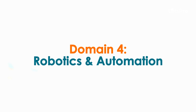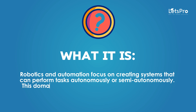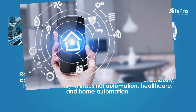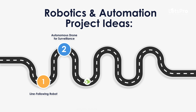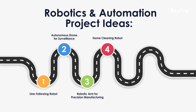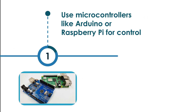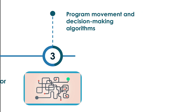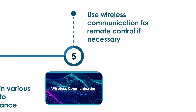Domain 4: Robotics and Automation. Robotics and automation focus on creating systems that can perform tasks autonomously or semi-autonomously. This domain is key in industrial automation, healthcare, and home automation. Project ideas include: line following robot, autonomous drone for surveillance, robotic arm for precision manufacturing, home cleaning robot, and smart warehouse automation system. For prototypes, use microcontrollers like Arduino or Raspberry Pi, implement sensors for obstacle detection, path planning and feedback, program movement and decision-making algorithms, test in various environments, and use wireless communication for remote control if necessary.